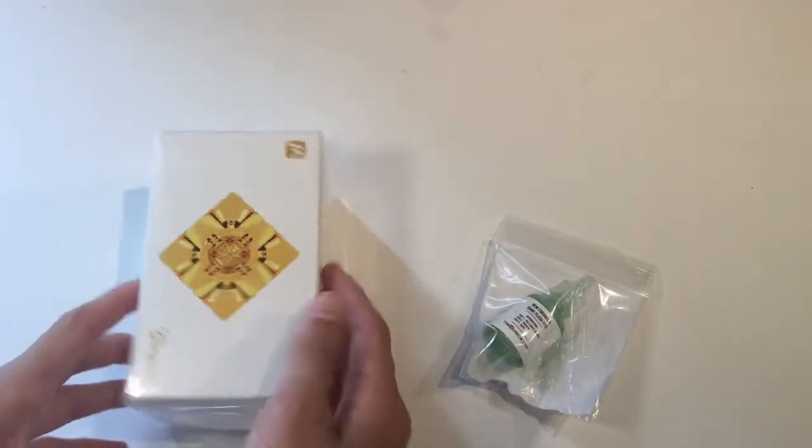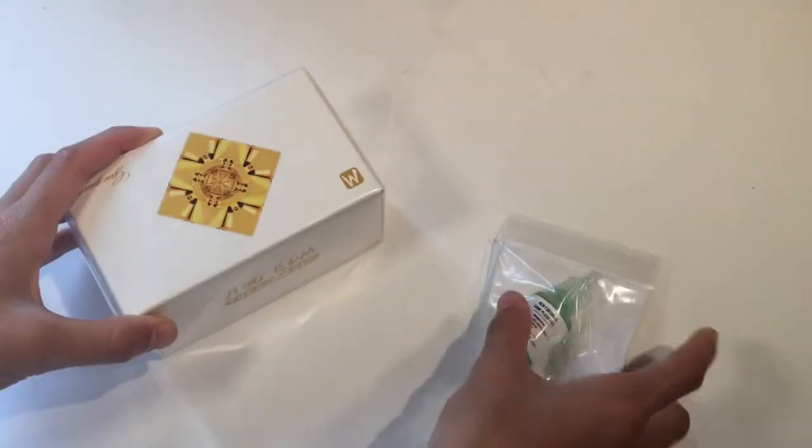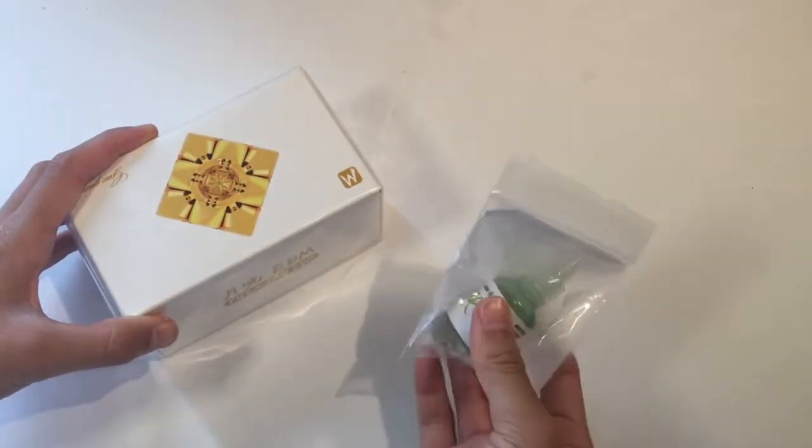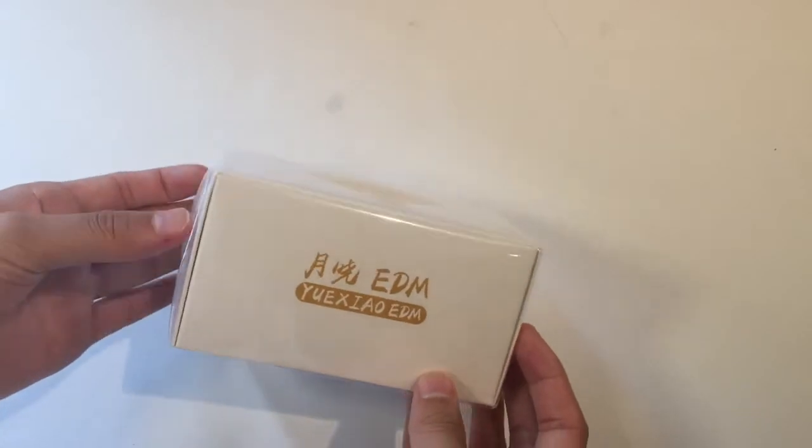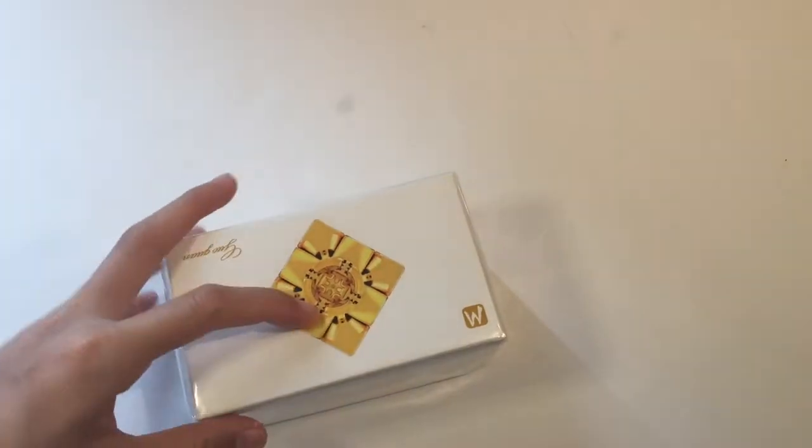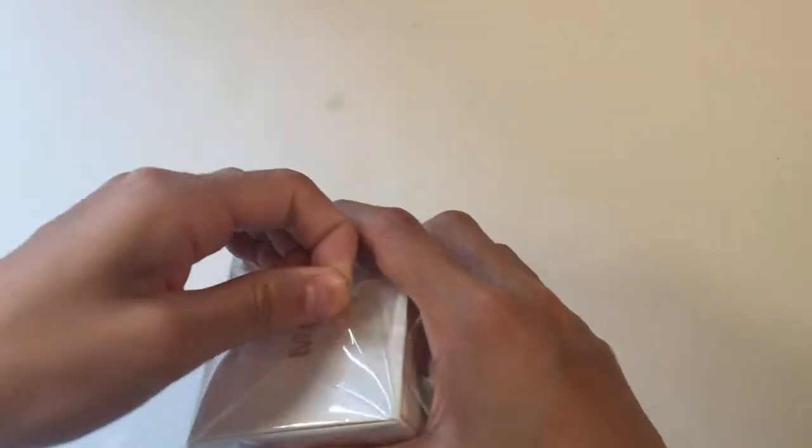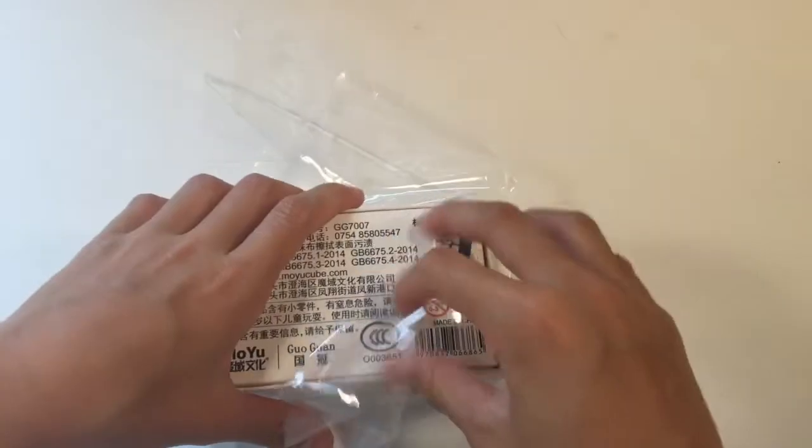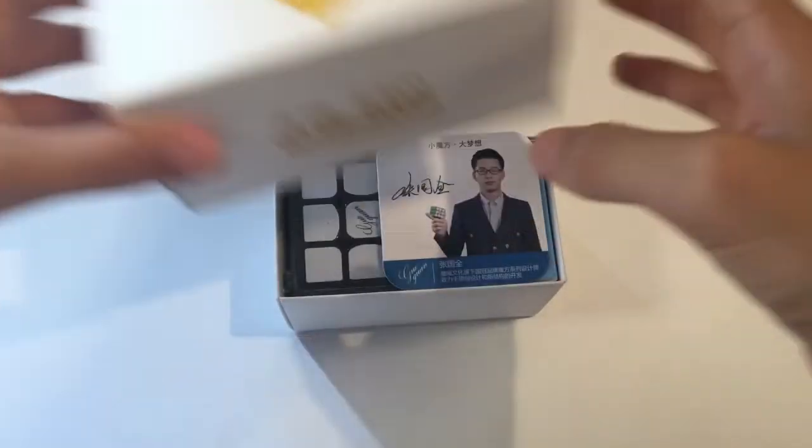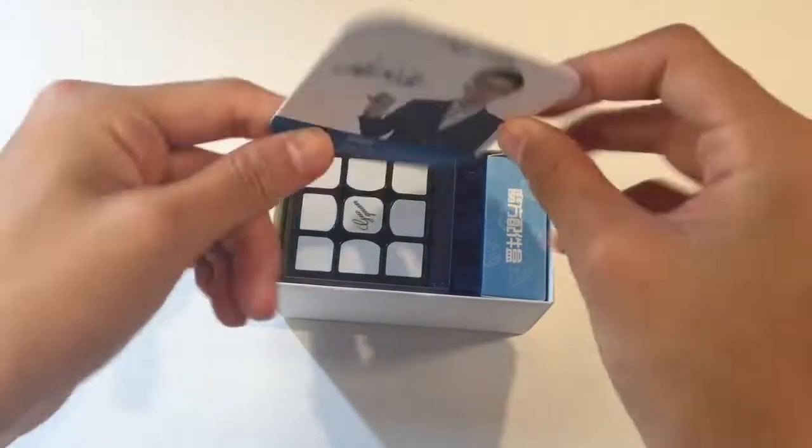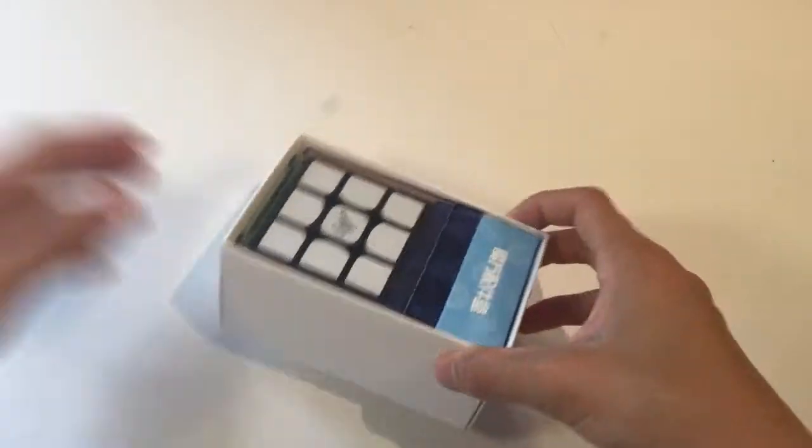So in the package we have the YuXiao EDM and the Cubicle Labs Silk. Alright, so this is the YuXiao EDM. Let's just open the package. So, just at the top we have this card here and we have the actual cube.